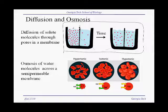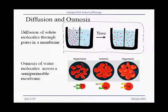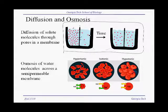Now, if this barrier — this dividing barrier — has pores that allow the passage of these red solute molecules, what happens then is that sometimes these red solute molecules, moving entirely randomly, will move through the pores to the other side. This can happen in either direction, but since there are so many more of these red molecules on the side with a high concentration, you will get more of these going from left to right than from right to left.